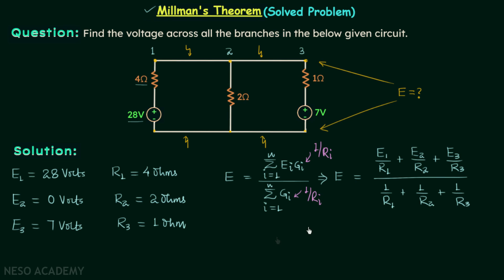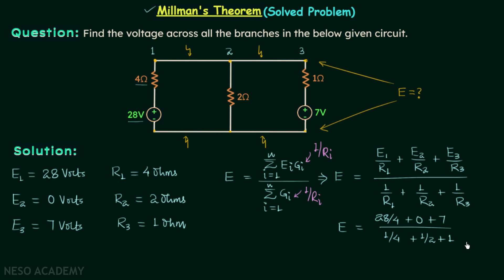Now we will put in the values of E1, E2, E3, R1, R2, and R3. E equals 28 over 4 plus 0 over 2 plus 7 over 1, divided by 1 over 4 plus 1 over 2 plus 1 over 1. When you simplify this you will have E equal to 8 volts. This is our answer.